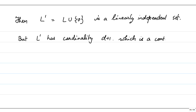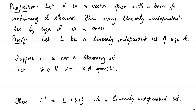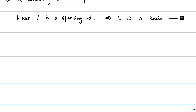This is a contradiction to the second corollary of the replacement theorem. Therefore our assumption is false, and L is a spanning set. Since L is also linearly independent, L is a basis. So we have proved that any linearly independent set of size D is necessarily a basis, and any spanning set of size D is also necessarily a basis, where D is the dimension of the given vector space.